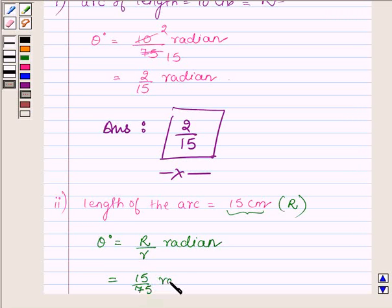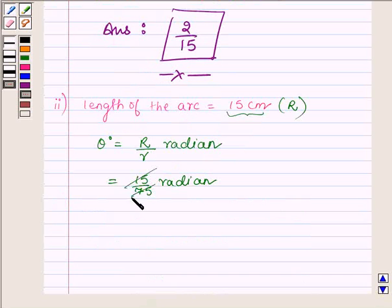which is equal to—15 into 5 is 75, so 1/5 radian. The answer for the second part is 1/5.